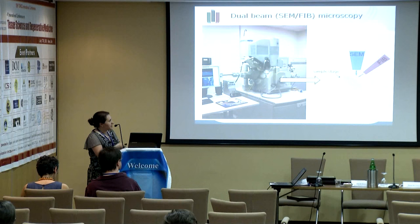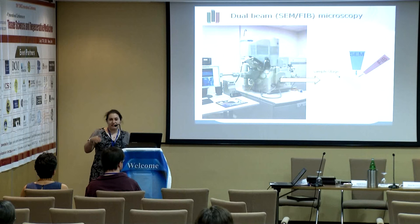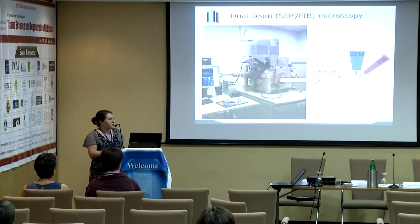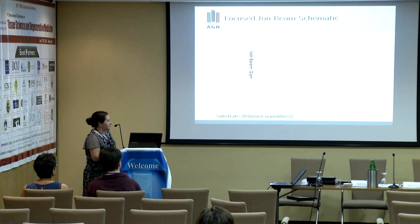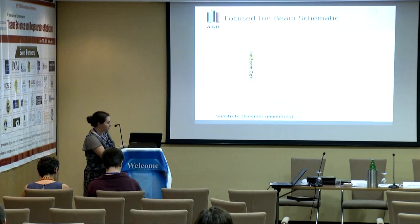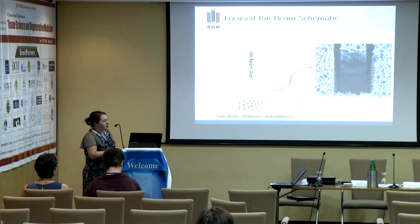We use the combination of scanning electron microscopy and focused ion beam. We tilt our sample perpendicular to the focused ion beam, which we use to cut the sample — so we destroy it. During the cutting we do imaging with scanning electron microscopy. The focused ion beam uses gallium ions that bombard the surface and remove the material from our polymer nanofibers, creating open space.